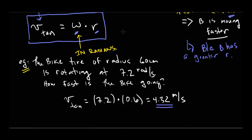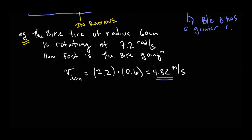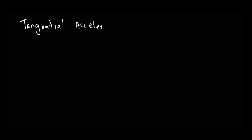Hopefully you're getting an appreciation for the fact that all that work to get comfortable with radians is now paying dividends. We could go through the exact same logic to talk about another tangential quantity — tangential acceleration. If an object is spinning faster and faster, not only is it undergoing an angular acceleration alpha, but it's also speeding up in the linear sense, undergoing a tangential acceleration, which is a linear acceleration.